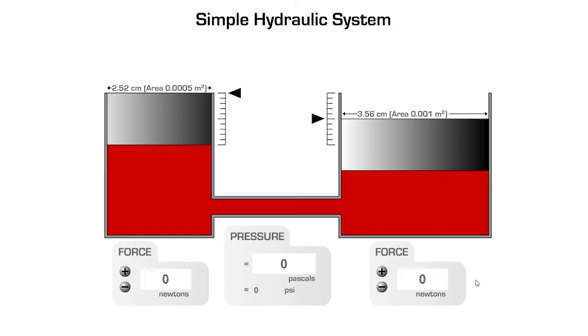Let's imagine we need to extend the larger piston to the top of its stroke. That means we need to move it by one, two, three, four, five divisions on the scale. Therefore, how far does the smaller piston need to move?